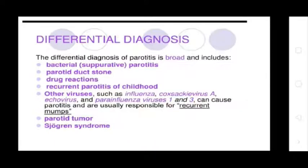Differential Diagnosis: The differential diagnosis of parotitis is broad and includes bacterial parotitis, parotid duct stone, drug reactions, recurrent parotitis of actual childhood, and other viruses. Differential diagnoses include EBV, Coxsackievirus A, picornavirus, and parainfluenza virus 1 and 3, which can cause parotitis and are usually responsible for recurrent cases. Also consider parotid tumor and Sjögren's syndrome.